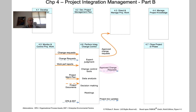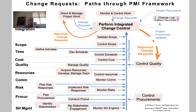Approved change requests also go through a check loop, which looks like this. They come through Control Quality, where we're going to check and make sure they were implemented successfully. And once we've verified that, we'll update the change log to reflect that through project documents updates again.